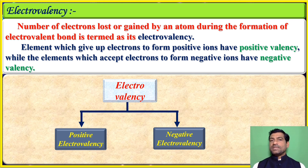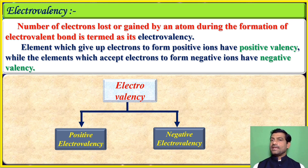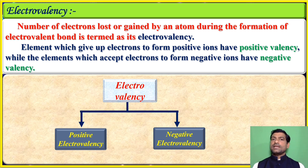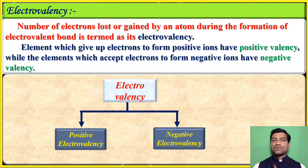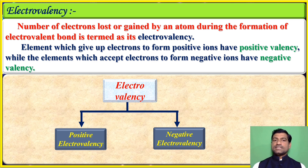An element which gives up electrons to form a positive ion has positive valency, while an element which accepts electrons to form a negative ion has negative valency. Electrovalency refers to atoms that lose or gain electrons during the formation of an ionic bond. Positive electrovalency means the atom donates electrons, and negative electrovalency means the atom accepts electrons.